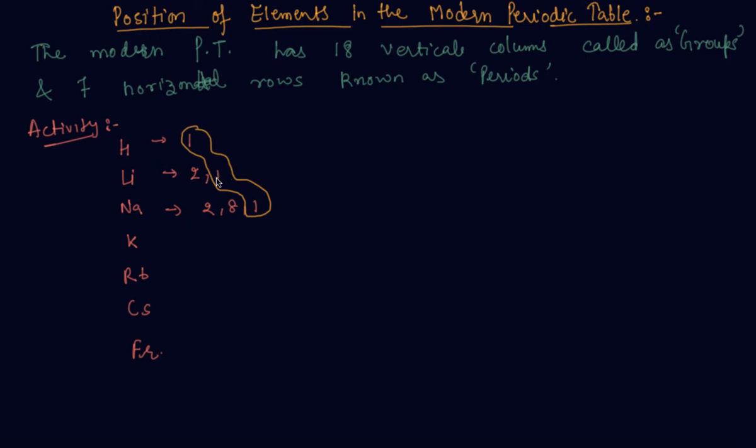You will find that the elements in one group have the same number of valence electrons. This activity we have done for only group one, and you can also check that different groups have the same number of valence electrons.